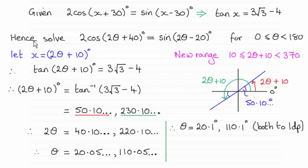It said hence so it had something to do with the previous part of the question. Remember in the previous part we had to show that this equation reduced down to tan x equals 3√3 minus 4.